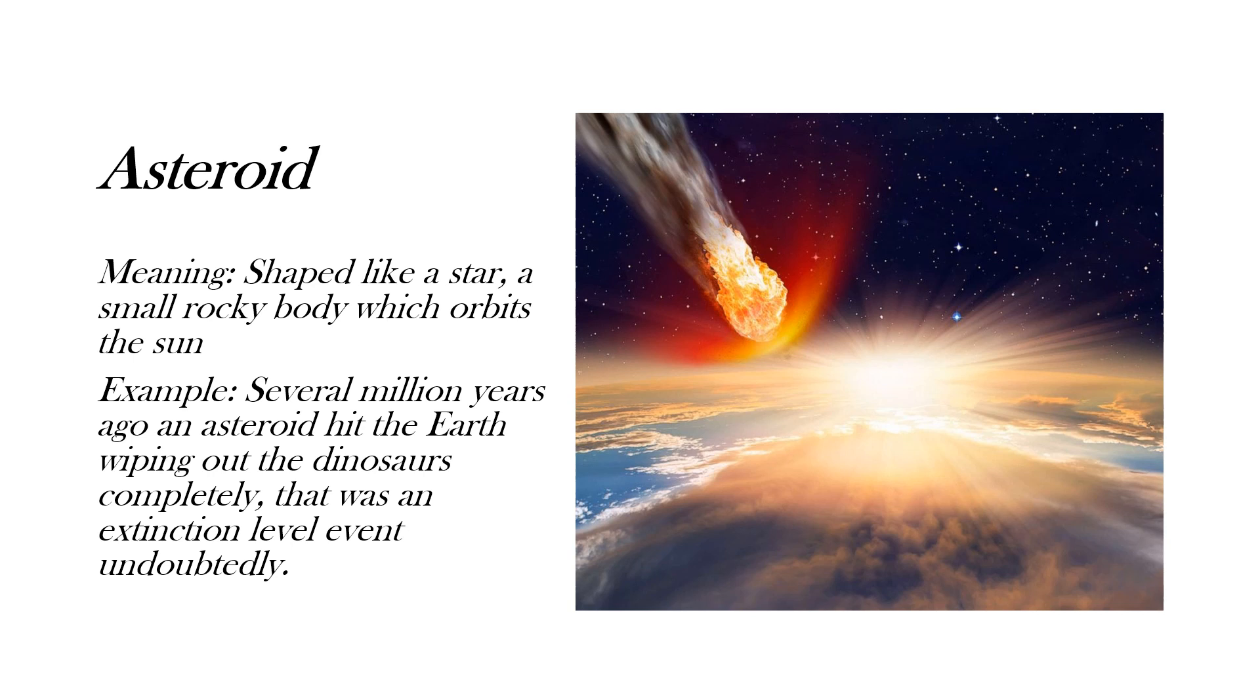For the fourth word, I have chosen asteroid. Asteroid means something that is shaped like a star or a small rocky body which orbits the sun. Here you can see a picture of asteroid coming towards the earth. Here our example is, several million years ago, an asteroid hit the earth wiping out the dinosaurs completely. That was an extinction level event undoubtedly.